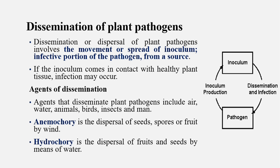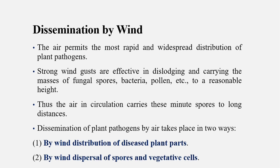Two important terms are anemochory and hydrochory. Anemochory means when seeds, spores, and fruits are dispersed by wind. Dissemination by air permits the most rapid and widespread distribution of plant pathogens. Strong wind disperses fungal spores, bacteria, pollen, and hyphal masses, carrying them to great heights.